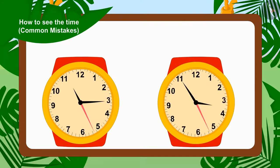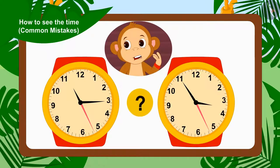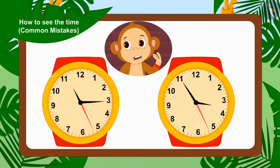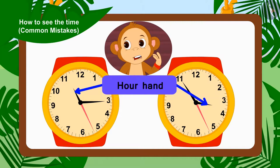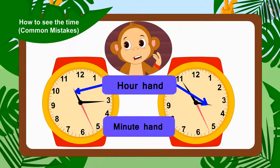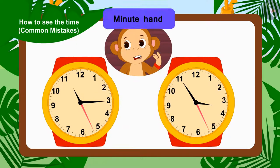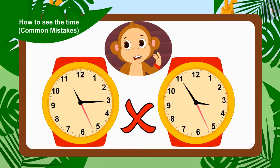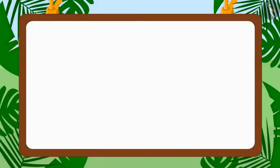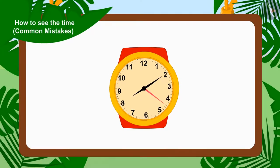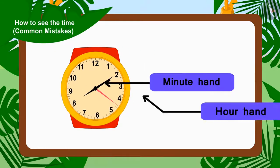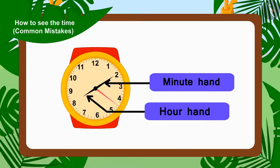Now, can you tell by looking at these two watches what mistake Babban has made? Yes, Babban replaced the hour needle with the minute needle, and the minute needle with the hour needle, to read time in the watch. So Babban saw the wrong time. Children, keep in mind: whenever you look at the time in the watch, identify the minute and hour needle properly, and then read the time.